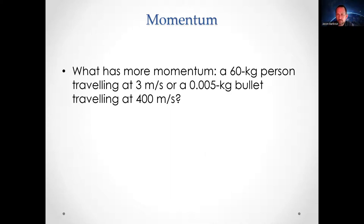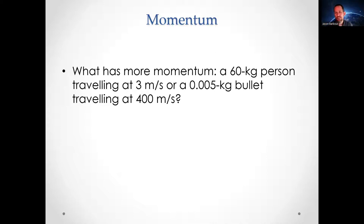What has more momentum — a 60-kilogram person traveling at 3 meters per second, or a bullet traveling at 400 meters per second? The person has more momentum: 180 kilogram meters per second, whereas the bullet has only 2 kilogram meters per second. So the person has 90 times more momentum than the bullet in this instance.